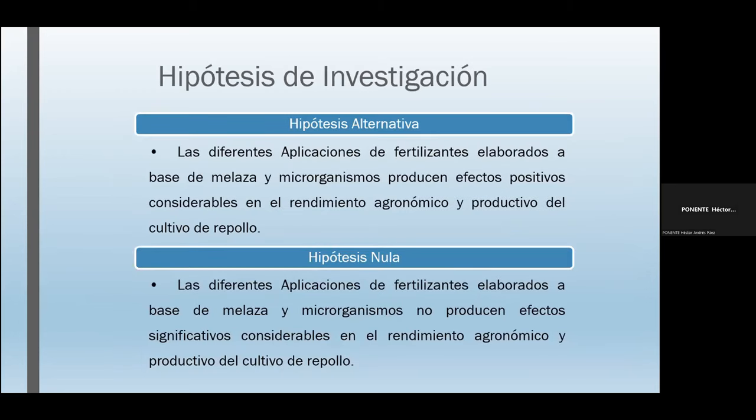En cuanto a la hipótesis: la hipótesis alterna dice que las diferentes aplicaciones de fertilizantes elaborados a base de melaza y microorganismo producen efectos positivos considerables en el rendimiento agronómico y productivo del cultivo del repollo. La hipótesis nula dice que no producen efectos significativos considerables en dicho rendimiento.